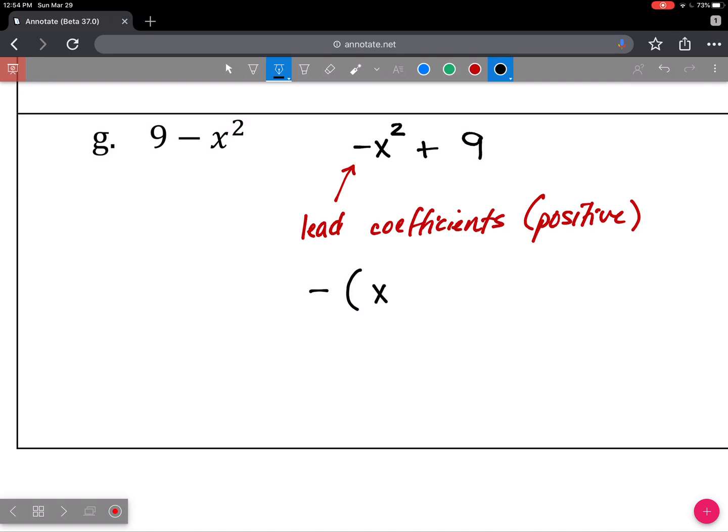We're going to make our lead coefficient positive. So in order to do that we factor out a negative 1, which switches the sign on each term. Now with this negative 1 on the outside we see we have the x minus 3 and the x plus 3. And that's done.